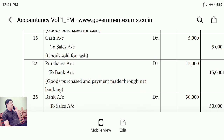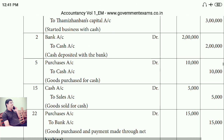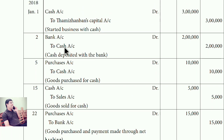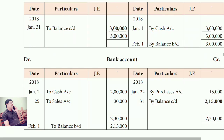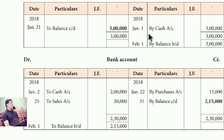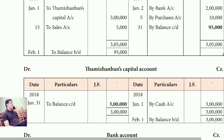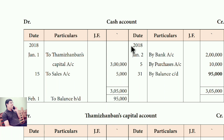See the second entry: Bank account debit, to cash account. In bank account on the debit side, write 'To cash account, 2 lakhs'. And in cash account, write 'By bank account' on the credit side — that is the opposite side.